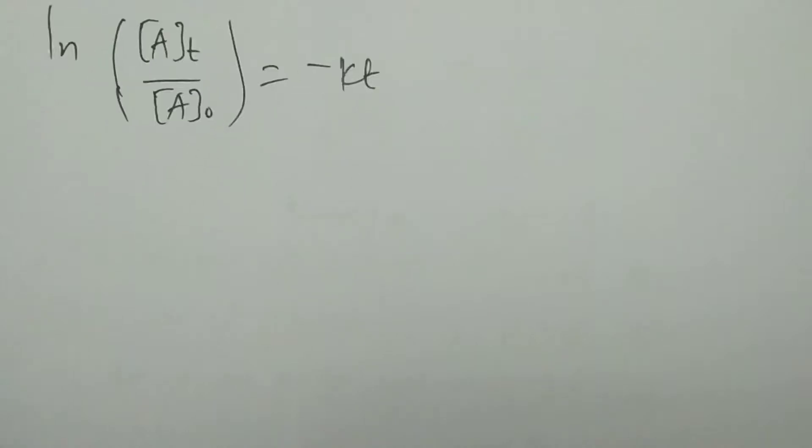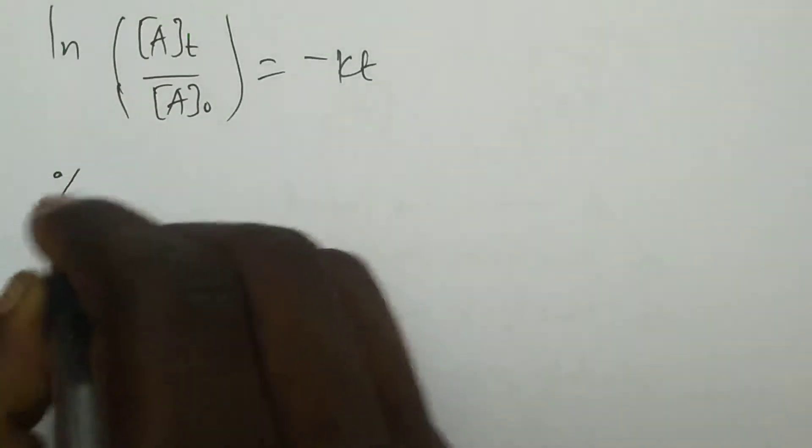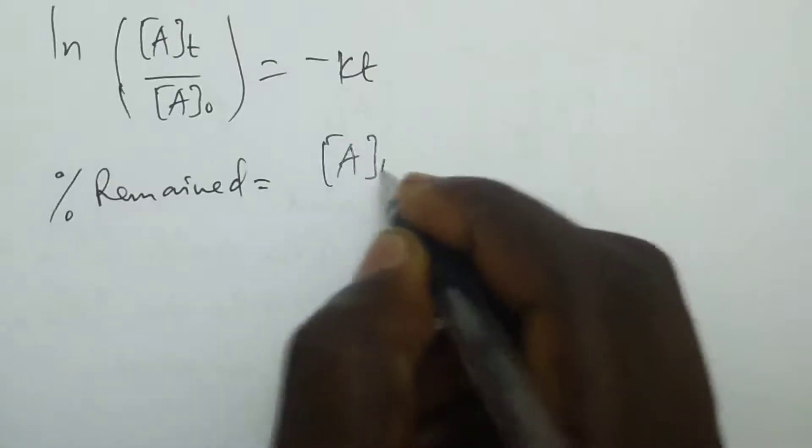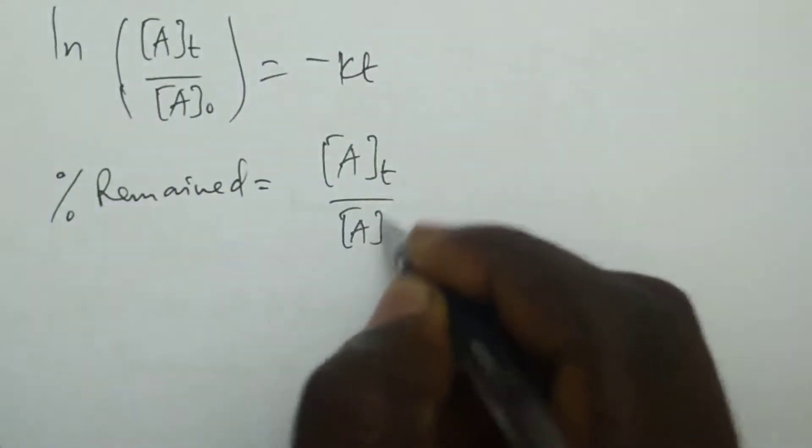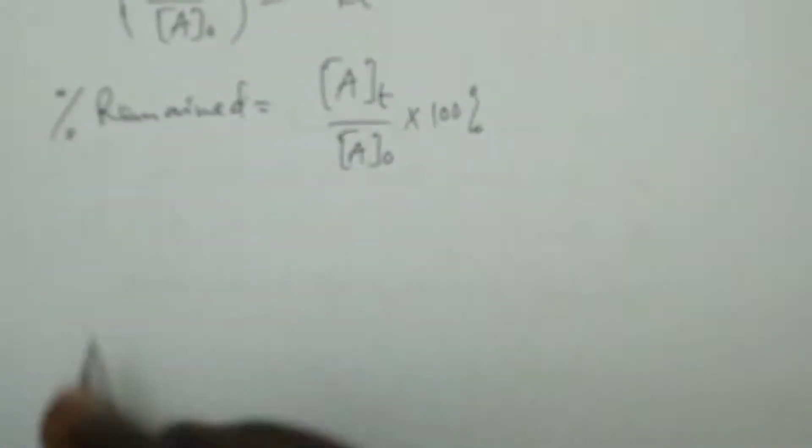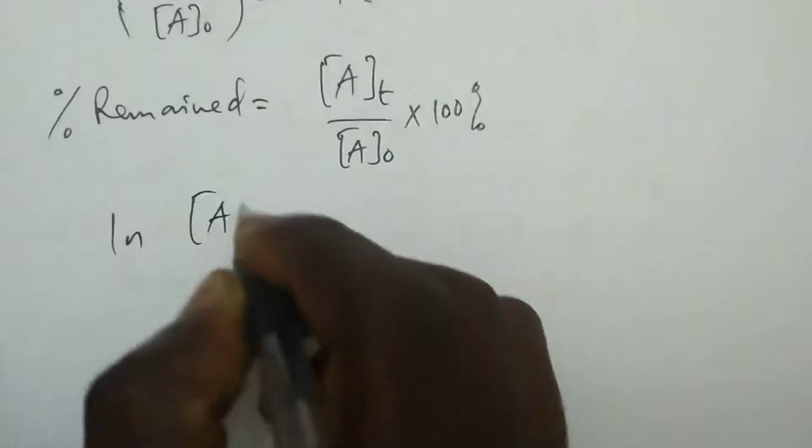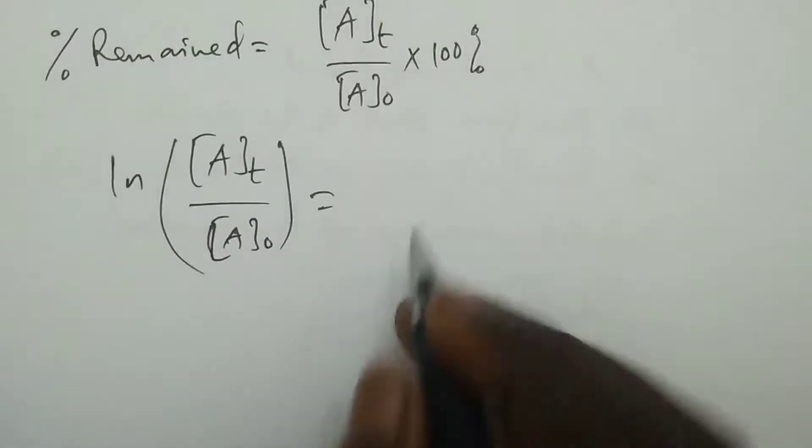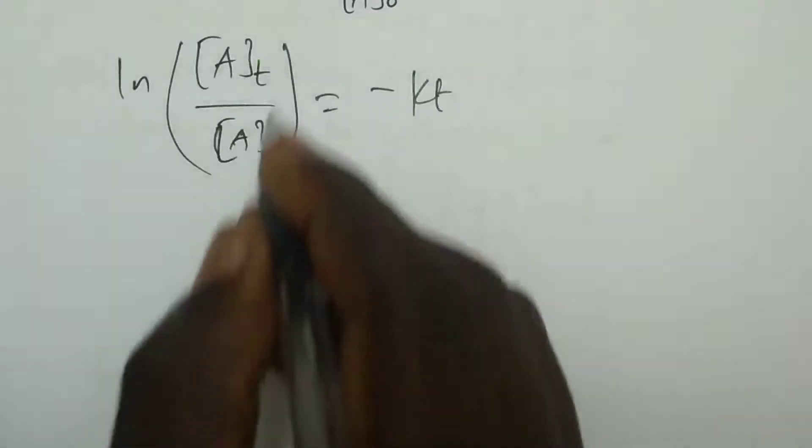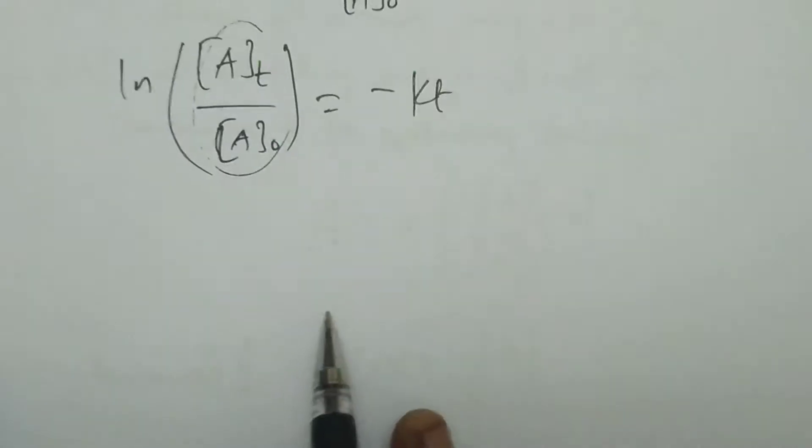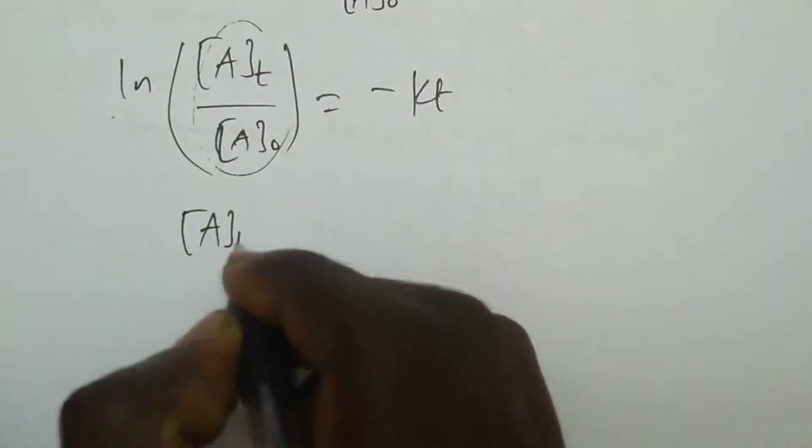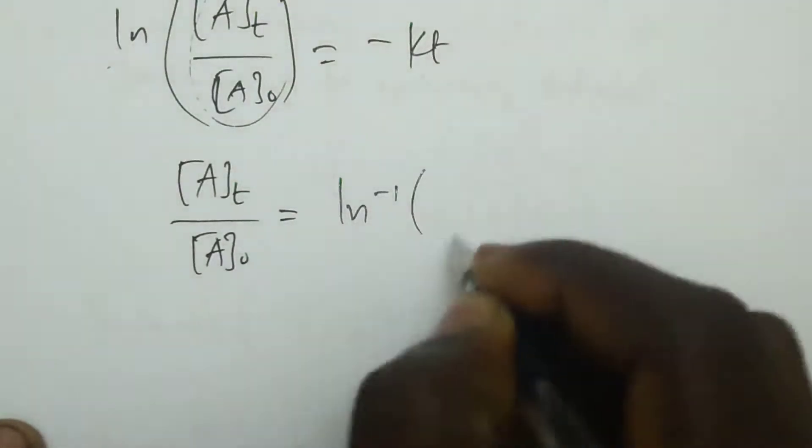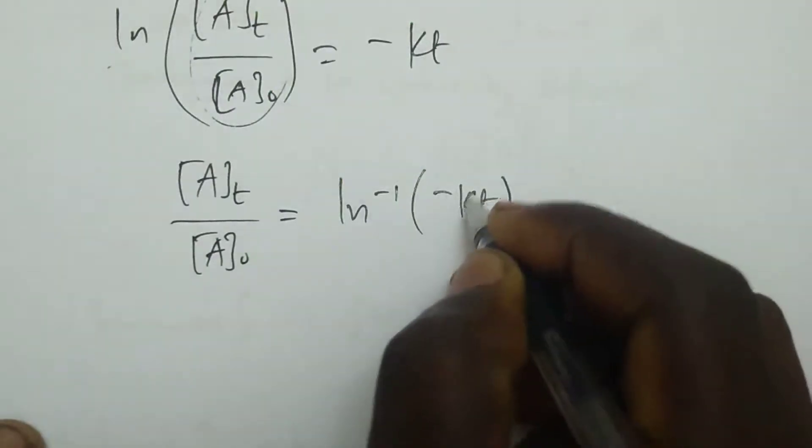So, that's how these kinds of questions are done, it needs true knowledge. For example, if you need to calculate the percentage reacted after some time, look, from ln of concentration Aₜ divided by concentration A₀ equals negative Kt. Now, from this equation, what we have is percentage remained will be concentration Aₜ divided by concentration A₀ times 100. That is to say, from ln of concentration Aₜ divided by concentration A₀ then equals negative Kt. Here, if we get this from the middle, with ln it goes, if you take the ln inverse, so it will be concentration Aₜ divided by concentration A₀ equals ln inverse of negative Kt.